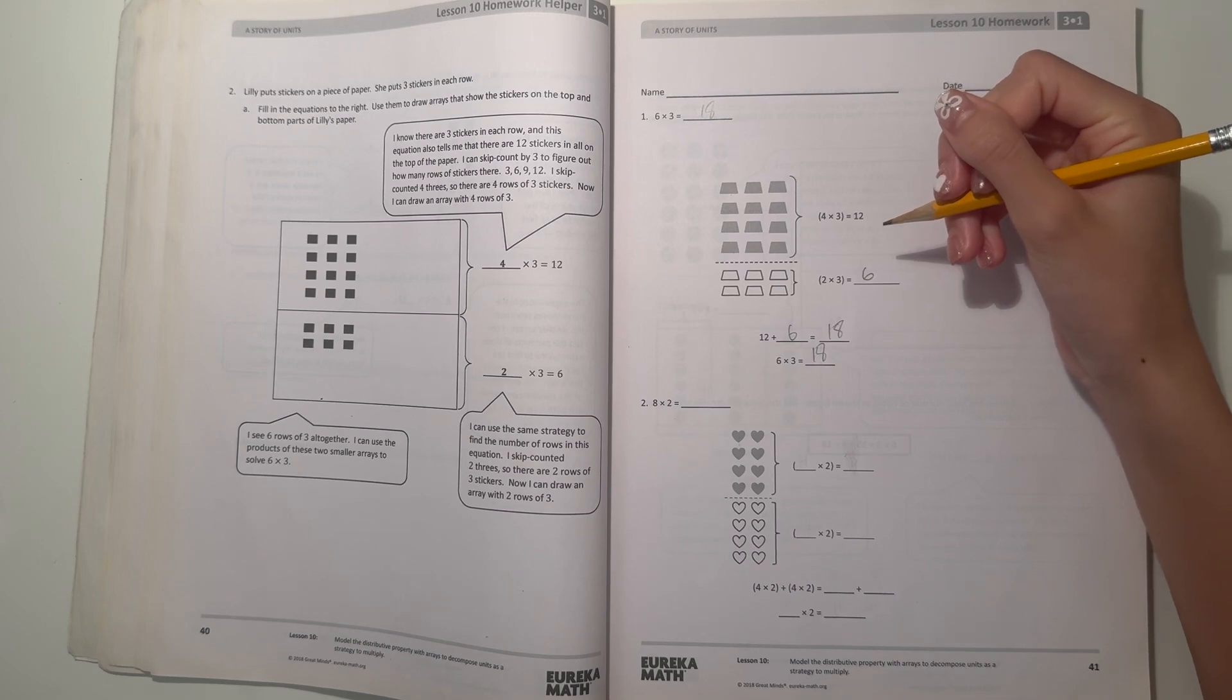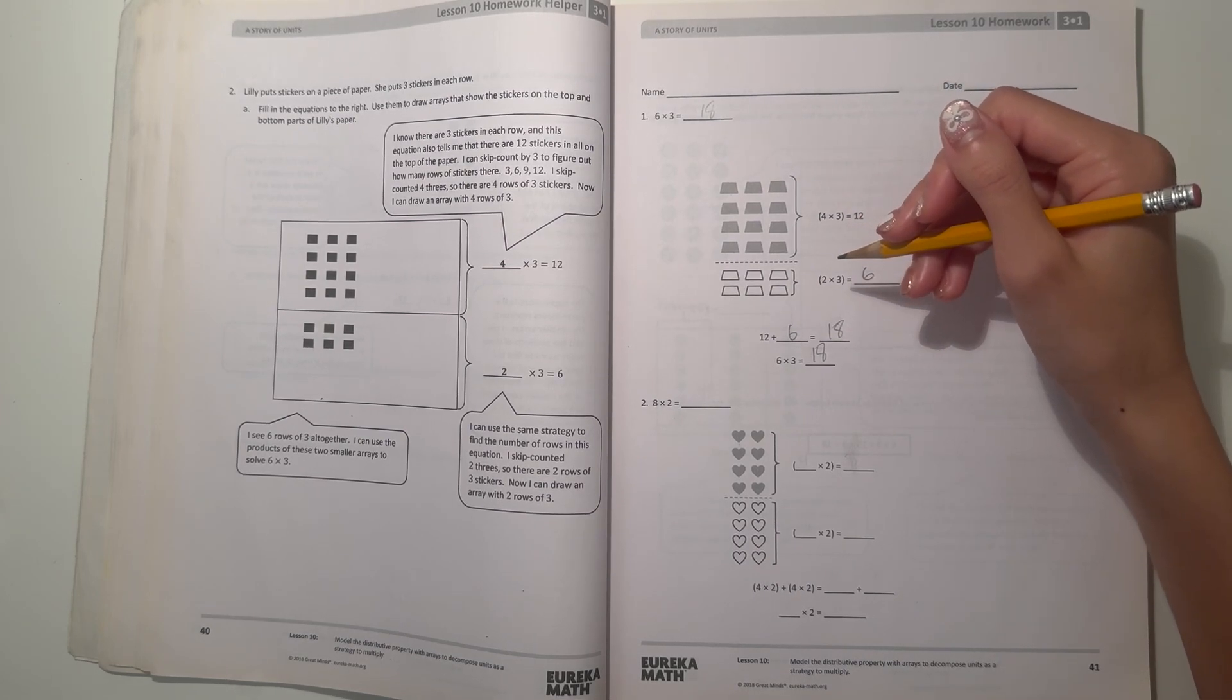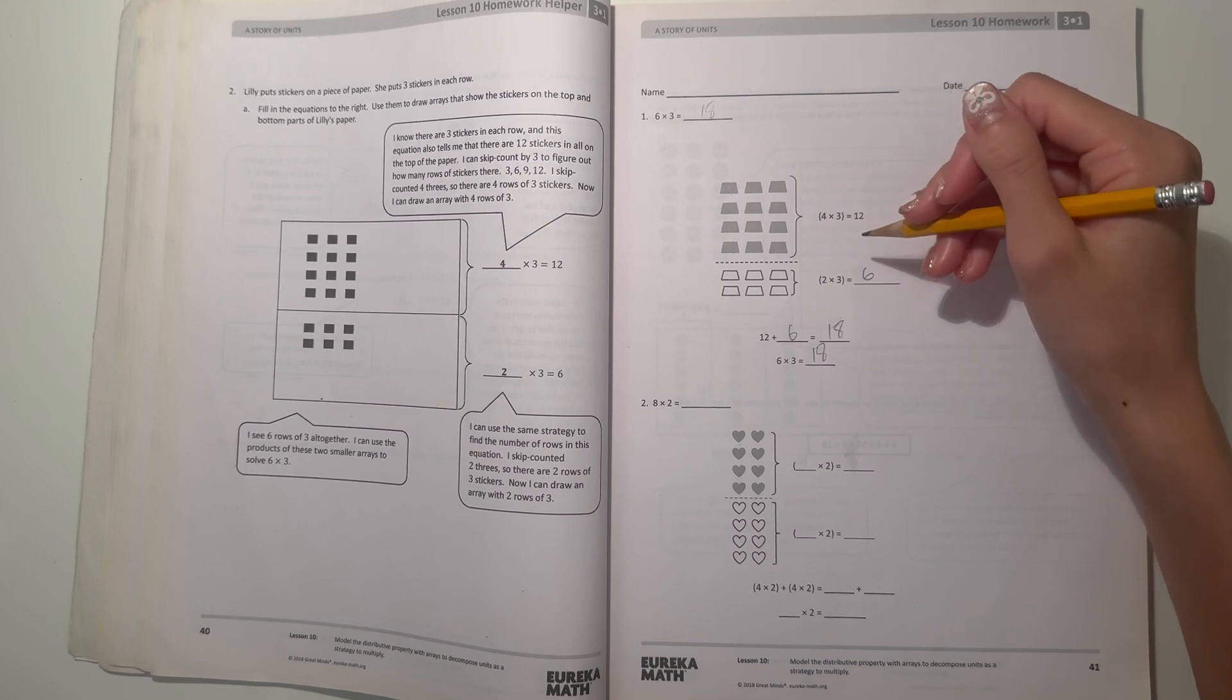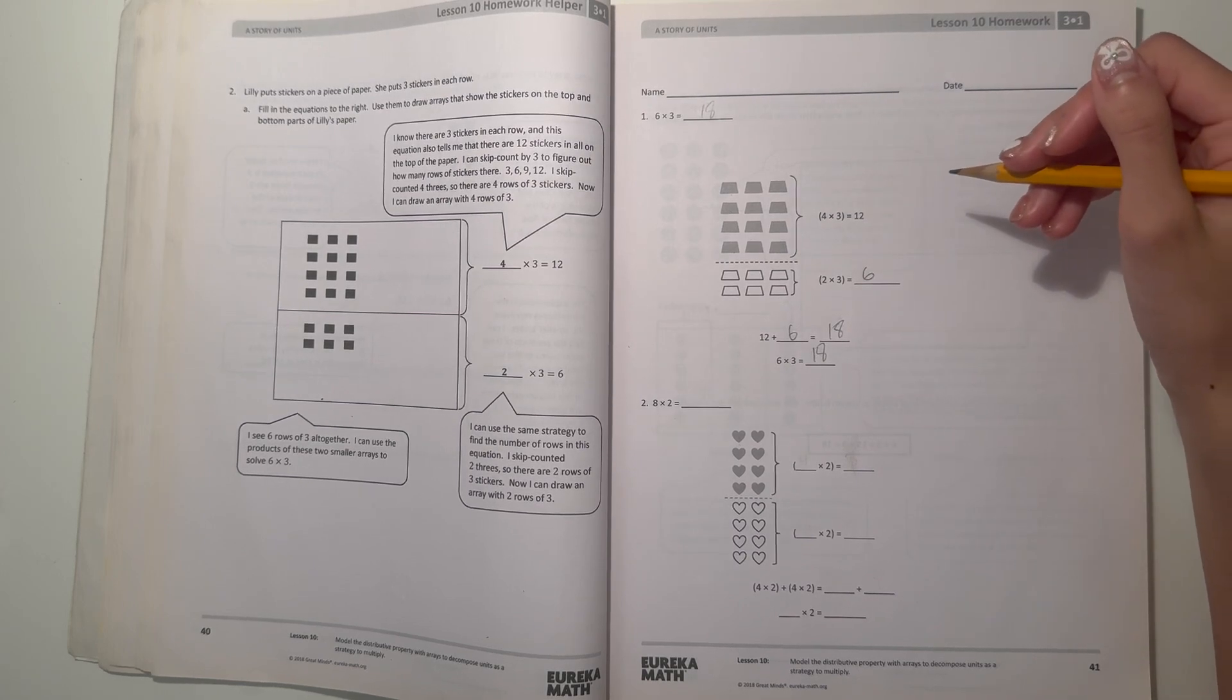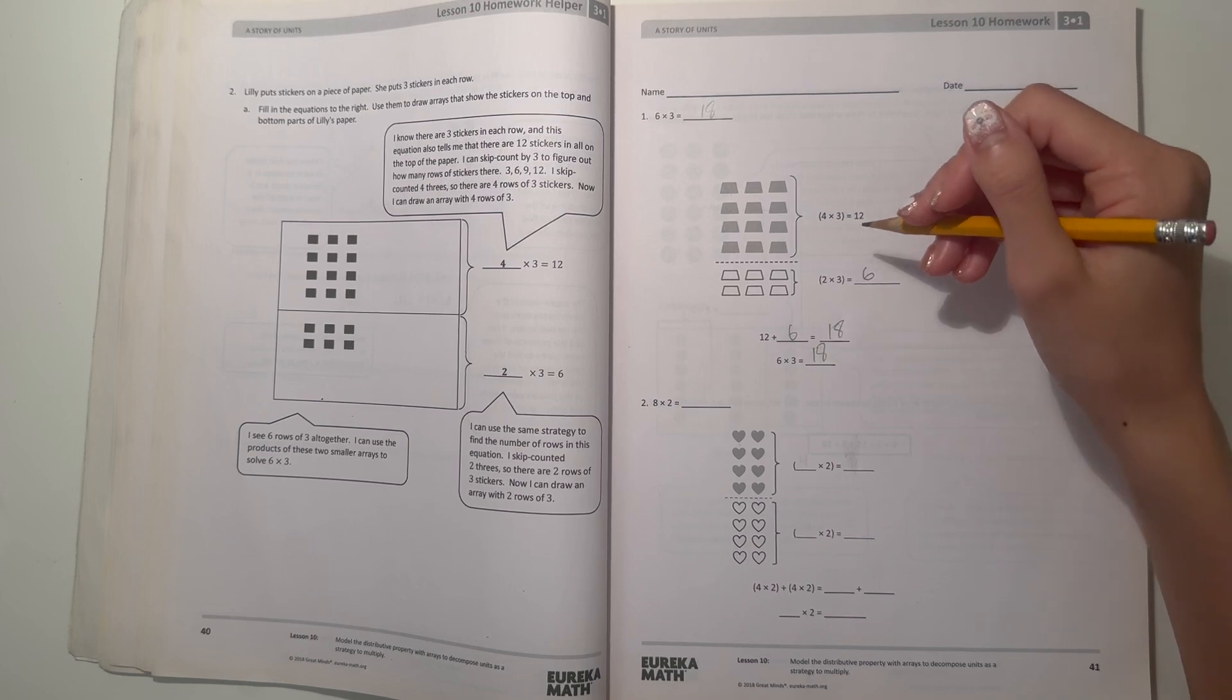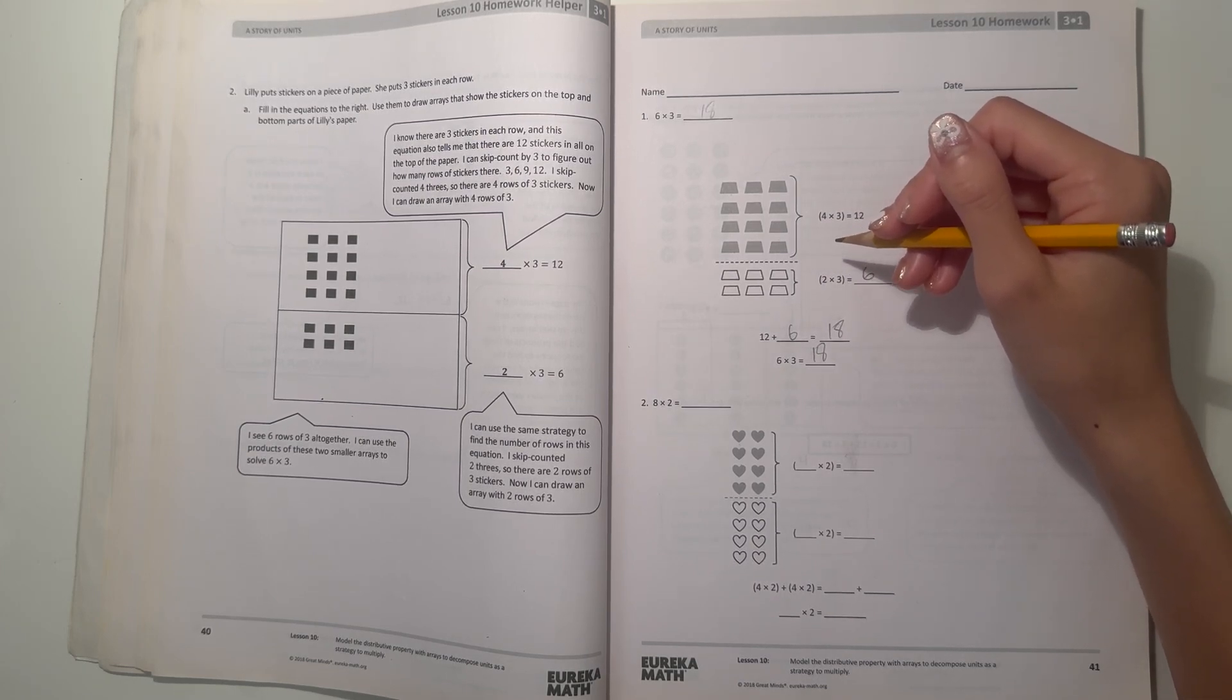They separated it into four times three and two times three, and the reason why, if you add the total of those two, is eighteen. Six times three is because we're doing four times three and two times three, and four plus two is six, so it would really be the same like doing six times three.